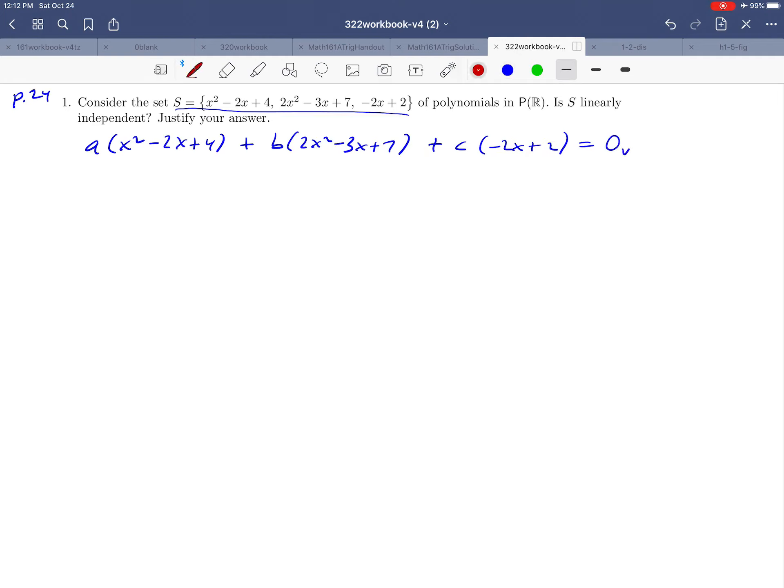And we'll set it equal to the zero vector. Now, one question we might ask here is, what is the zero vector in our vector space? Well, our vector space is P of R. So when we write zero vector, we mean the zero polynomial here. We'll just keep that in mind as we're doing this problem.